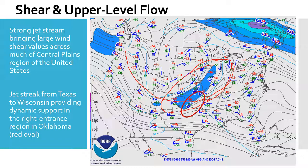Remember that we want to look for our left exit and right entrance regions. The right entrance region is circled in the red oval here over central Oklahoma and northern Texas.